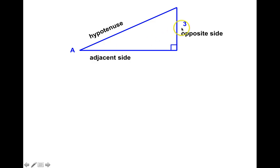So let's label these sides. In this example, the opposite side has a length of 3, the adjacent side a length of 4, the hypotenuse a length of 5. So it's a 3, 4, 5 Pythagorean triple.